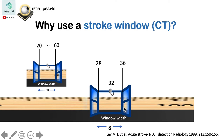So with the center at 32, we will see a Hounsfield range of 28 to 36. This is because the center is at 32; we subtract 4, which is half of 8, getting 28. And 32 plus the half of 8, which is 4, is 36.